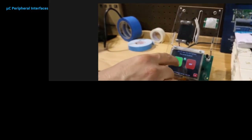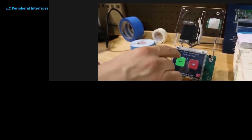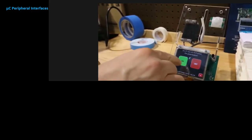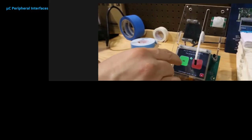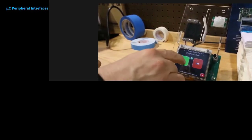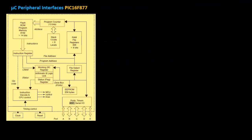The Microchip DS-PIC range is designed specifically for high speed analog signal processing. The PIC16F877 has 8 analog inputs, which are accessed via RA0 to RA5, and RE0 to RE2.